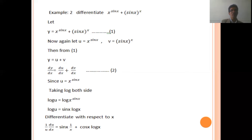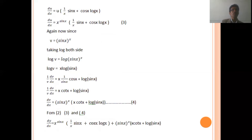Since u equal to x to the power sin x, taking log both sides: log u equal to log x to the power sin x. Therefore, log u equal to sin x log x, using the logarithm property. Now differentiating with respect to x: 1 upon u, du by dx, equal to sin x times differentiation of log x which is 1 by x, plus log x times differentiation of sin x which is cos x. Using the product rule. So, du upon dx equal to u times (sin x upon x, plus cos x log x). Substituting value of u equal to x to the power sin x: du upon dx equal to x to the power sin x times (sin x upon x, plus cos x log x). This is equation number three.